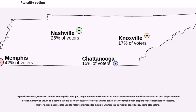In political science, the use of plurality voting with multiple single-winner constituencies to elect a multi-member body is often referred to as single-member district plurality, or SMDP. This combination is also referred to as winner-takes-all, to contrast it with proportional representation systems. The term is sometimes also used to refer to elections for multiple winners in a particular constituency using block voting.